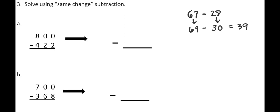Here's how we use that strategy to subtract 800 minus 422. Because of the zeros in 800, we'd have to do a lot of decomposing. But if I subtract 1 from each number, 800 minus 1 gives me 799, and 422 minus 1 gives me 421. Now I can do the subtraction without any decomposing: 9 minus 1 is 8, 9 minus 2 is 7, and 7 minus 4 is 3. The answer is the same as 800 minus 422 — we just solved it in a friendlier way.